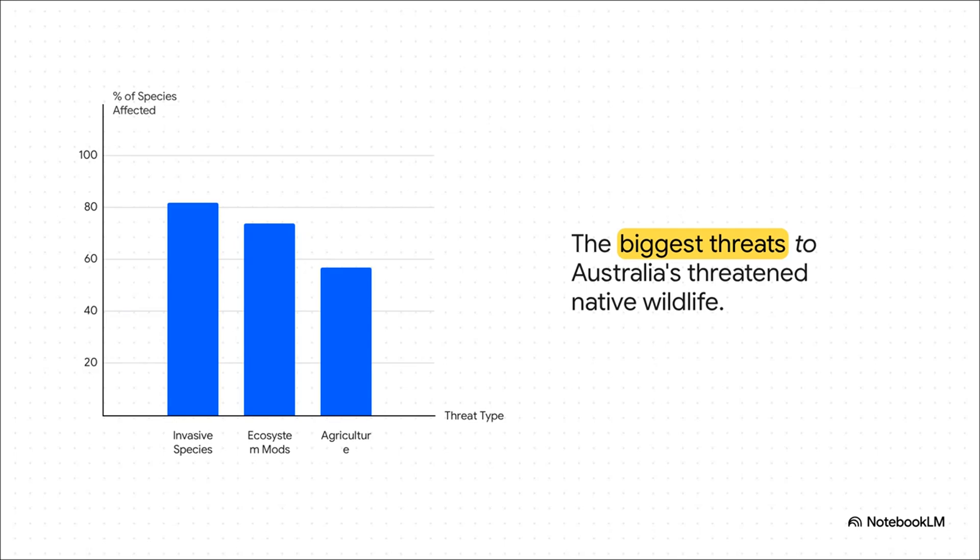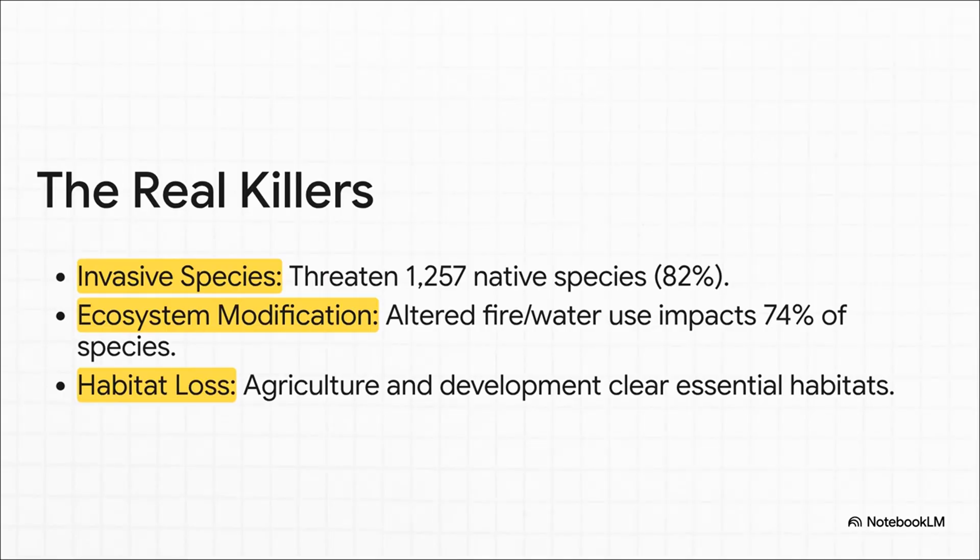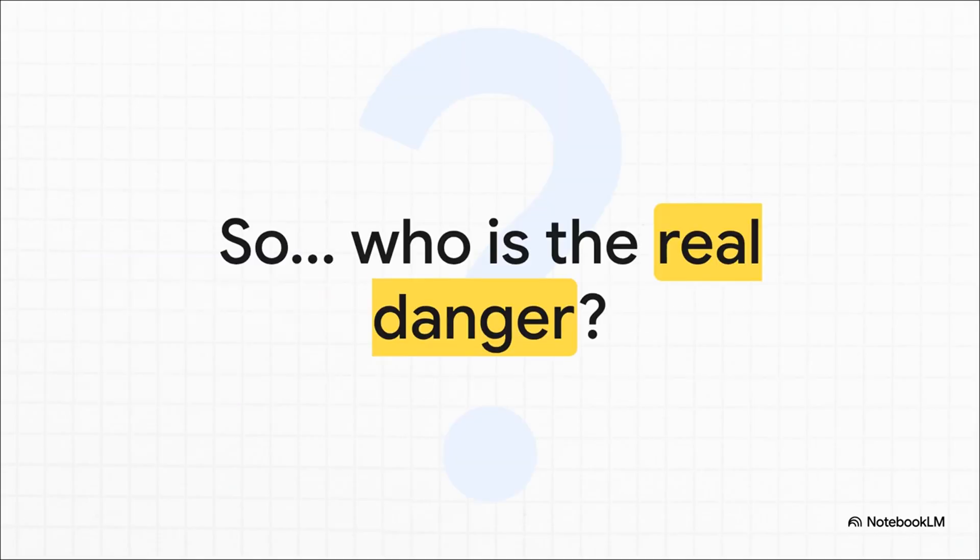This chart doesn't show the animals that are a threat to us. It shows the biggest threats to Australia's native wildlife. And what are the top culprits? Invasive species, changes we've made to the ecosystem, and agriculture. These are the real killers. We're talking about introduced predators like feral cats and red foxes. We're talking about habitat being lost to farming and cities. And huge changes to the very landscape that these unique animals spent millions of years evolving in. These human-driven pressures are the real threat to the survival of Australia's incredible wildlife. Which really leaves us with one final question to think about. Who is the real danger?